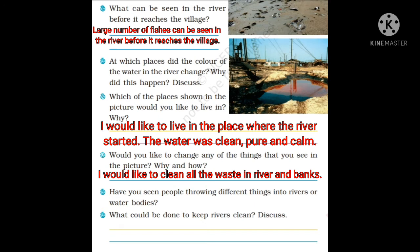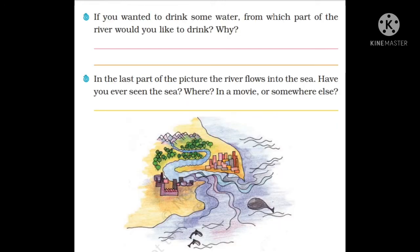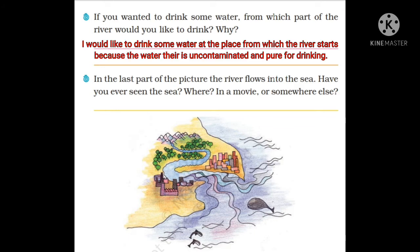Have you ever seen people throwing things into rivers or water bodies? Yes, I have seen it many times. What could be done to keep rivers clean? First, do not wash clothes or bathe animals in water. Second, industrial waste should not be discarded into the water. Page 108: If you wanted to drink some water, from which part of the river would you drink and why? I would drink from where the river starts because the water there is uncontaminated and pure. In the last part of the picture, the river flows into the sea. Have you ever seen the sea? Yes, I have seen the sea in movies.